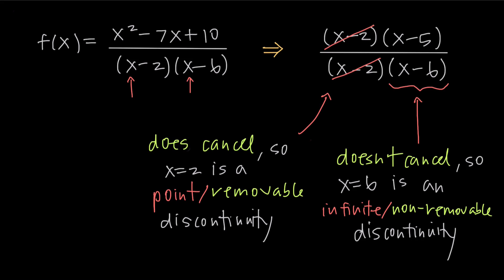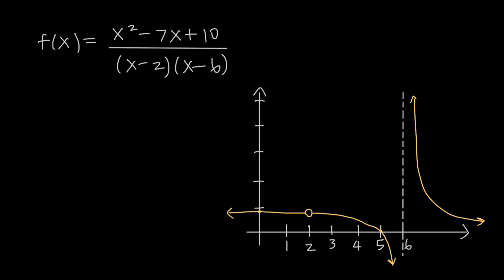Since we couldn't factor out the x minus 6, it means x equals 6 is an infinite or non-removable discontinuity. If we sketch the curve, we can see the point discontinuity at x equals 2 and the infinite discontinuity, which is just a vertical asymptote by the way, at x equals 6.